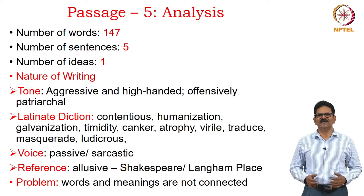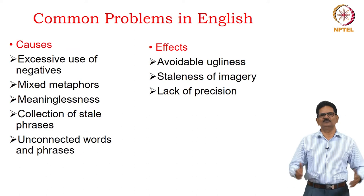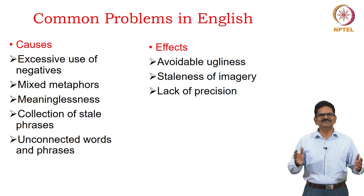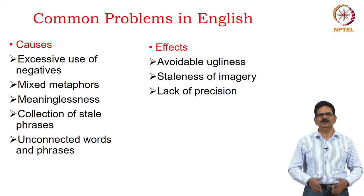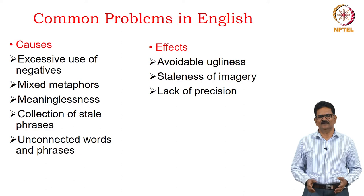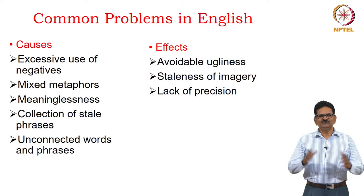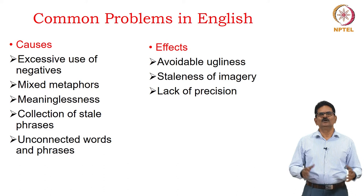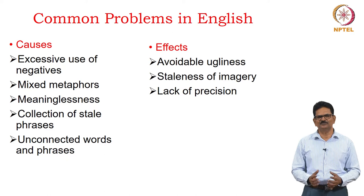What are the common problems in English language that Orwell identifies? Excessive use of negatives — we should not use more than necessary. Mixed metaphors — we can use metaphors but should not mix too many. Meaninglessness — there should always be a central idea we want to convey. We should not have a collection of stale phrases in our writing. And lastly, whatever words we use must be connected properly — only then can they give meaning to the reader.